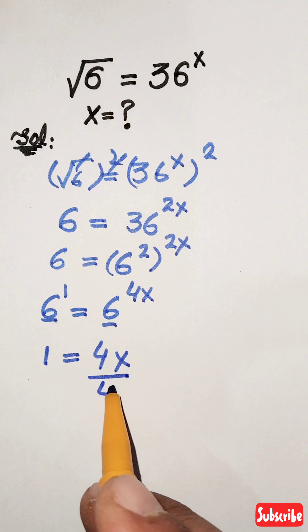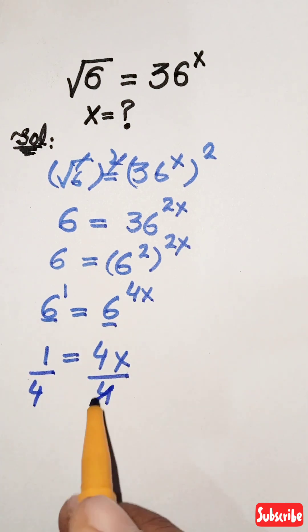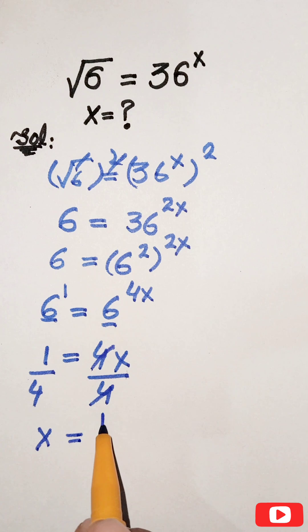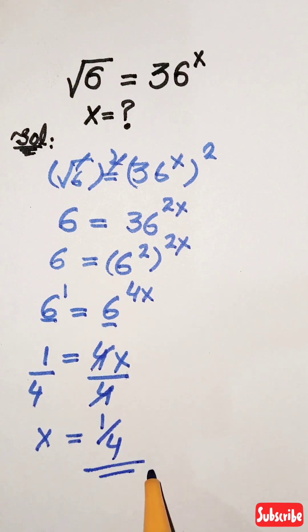Dividing both sides by 4 and cancelling, we get x equals 1 over 4. This is our final answer.